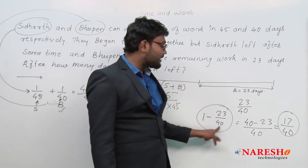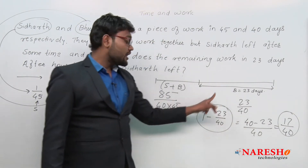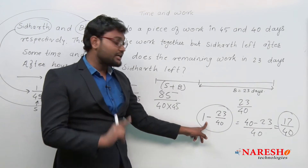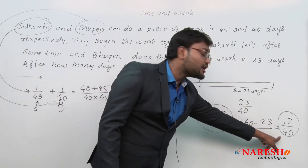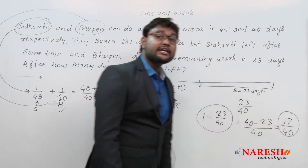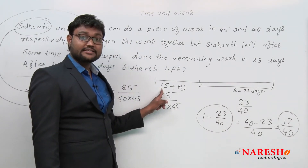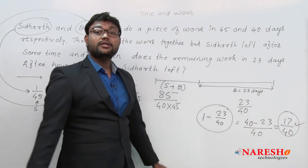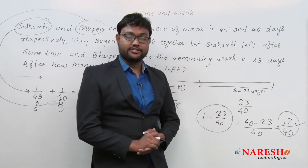So 23/40 is the work done by Bhupen alone. From one complete work, subtracting Bhupen's 23 days' work gives us 17/40. Can I say that 17/40 is the work done before Siddhartha left? Yes, of course! So 17/40 is the work done before Siddhartha left. Now let us see what is our next procedure.